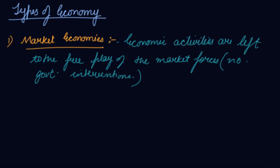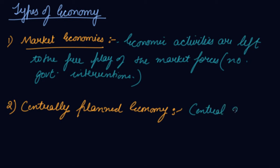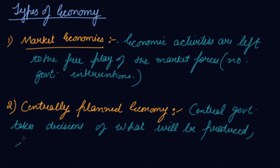The second type is centrally planned economy. In this, a central government takes decisions of what will be produced, how it will be produced, and the price or allocation of resources.